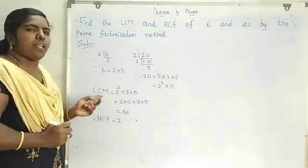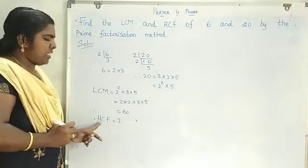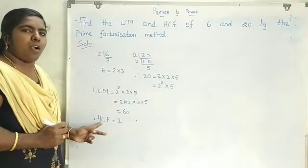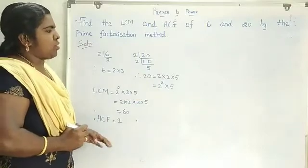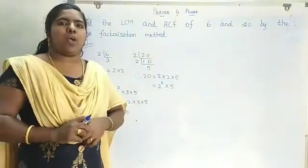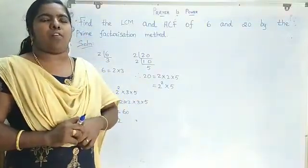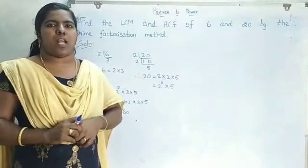LCM means product of greatest power. HCF means product of smallest power of each prime factor. That's all. If you like this video, please press the like button. If you have not, please subscribe. Thank you.